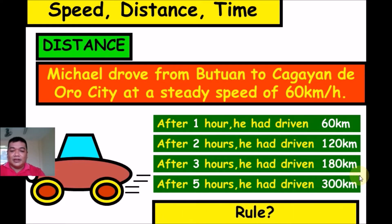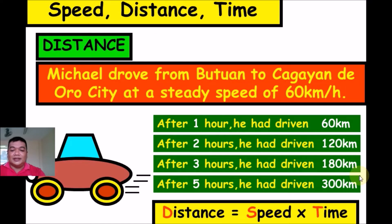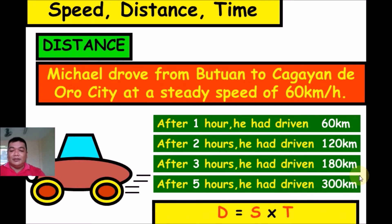The rule for getting distance is: Distance is equal to Speed times Time. We multiply the amount of speed by the time. In abbreviation: D = S × T, where D stands for distance, S for speed, and T for time.